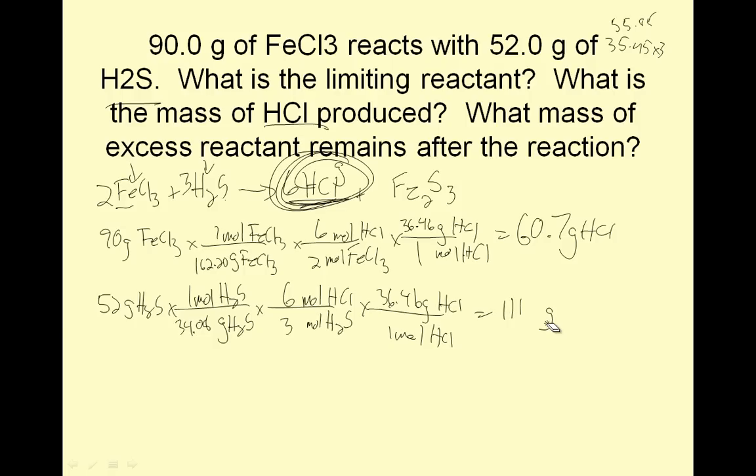52 divided by 34.08 times 2, I reduced in my head, times 36.46 is 111.3 grams, or to three sig figs, 111 grams. How much is really made? The most FeCl3 can make is 60. The most H2S can make is 111. My limiting reactant is FeCl3. My excess reactant is H2S.